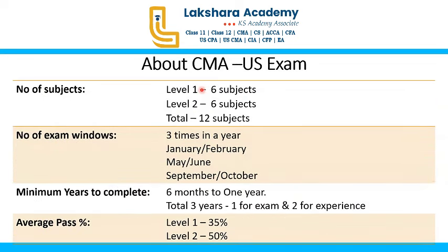Let's look at the exam pattern. There are only two levels of exams — level one is an exam and level two is an exam. Within each level, you will have six different subjects, so level one has six subjects and level two has another six subjects, totalling 12 subjects overall.